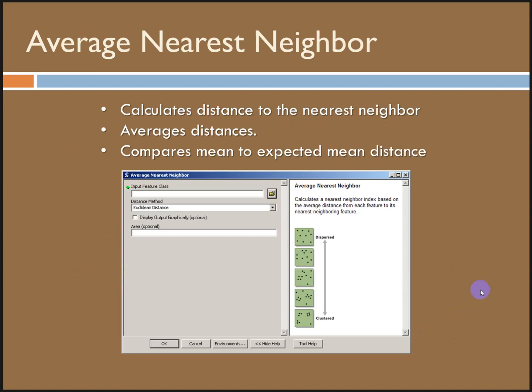The first tool is called average nearest neighbor. It's the most basic way that we can begin seeking information about spatial distribution. This tool calculates the distance to the nearest neighbor for every feature. It averages the distances, and then compares that average or mean distance to what we would expect the mean distance to be if those same number of points were randomly distributed over the same spatial extent.